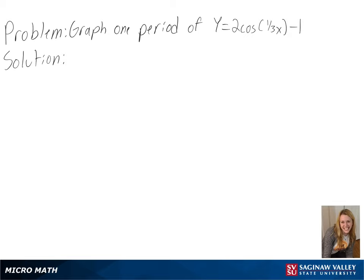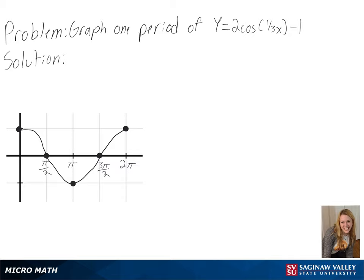Our problem is to graph one period of y equals 2 cosine of a third x minus 1. We can look at an original graph of y equals cosine of x to see how ours will be changing.